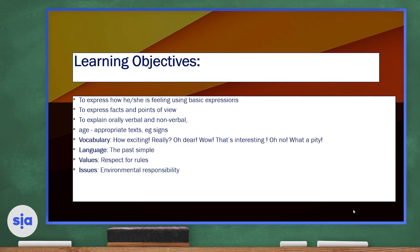Hello everyone and welcome to a new episode. We're going to be working on Unit 5, Lessons 5 and 6 today. Our topic is still holiday. Let's get started with our objectives. We're going to be expressing how he or she is feeling using basic expressions, expressing facts and points of view, and explaining orally, verbally, and non-verbally. We're going to look at age-appropriate texts like signs and learn vocabulary such as 'how exciting,' 'really,' 'oh dear,' 'wow,' 'that's interesting,' 'oh no,' and 'what a pity.' For language, we're working on the past simple tense. As for values, we'll discuss respect for rules, and the general issue for the unit is environmental responsibility.